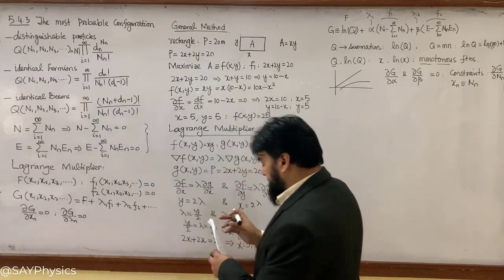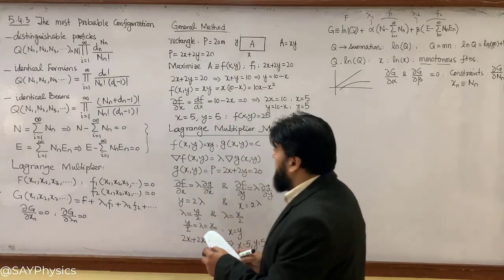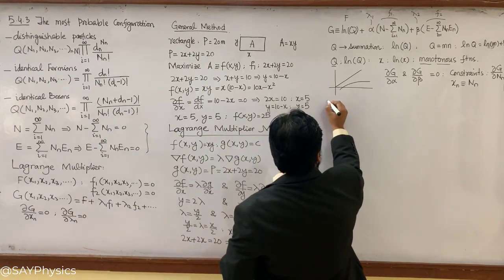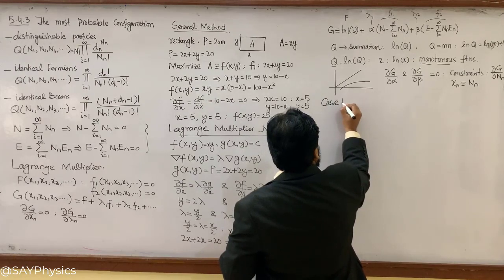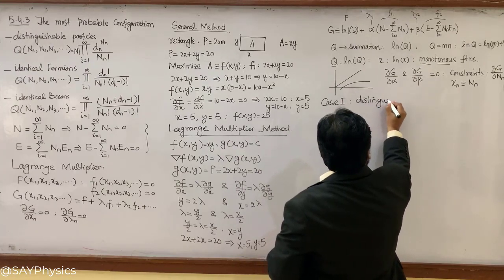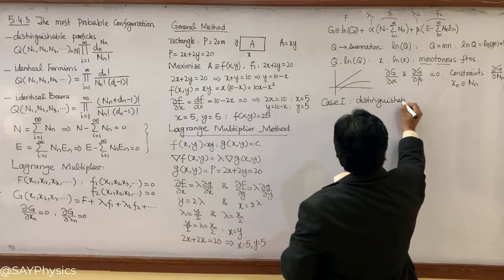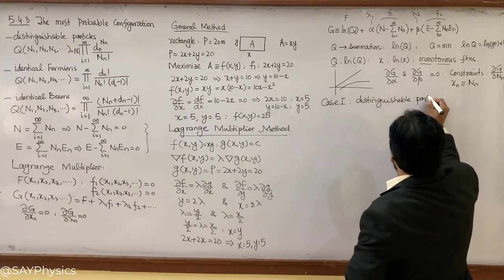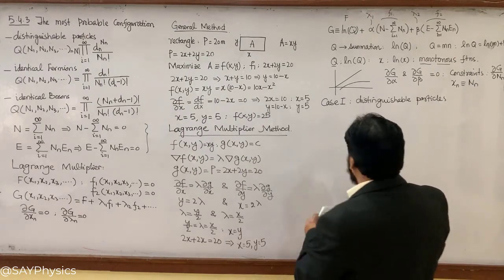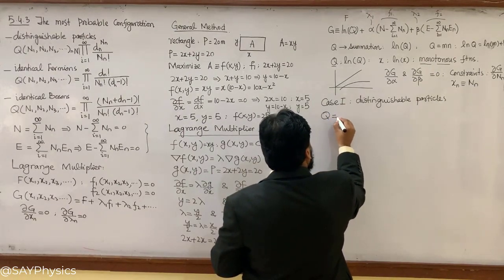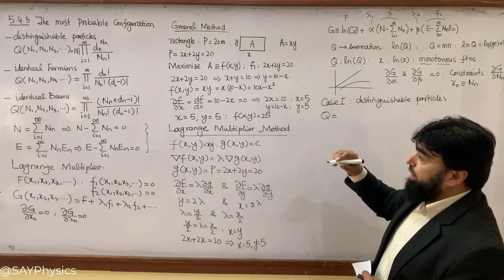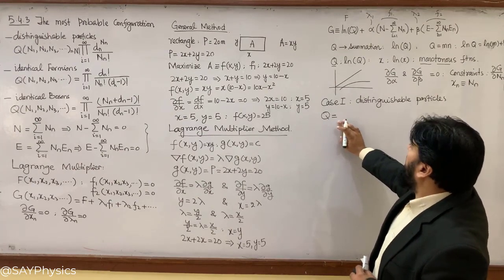Now let's start with the differentiation. I will first start with the distinguishable particles, which is case 1. Case 1 is the distinguishable particles, and we have already written the partition function Q for the distinguishable particles as Q(N1, N2, ...) — I will not repeat that but will write it correctly.